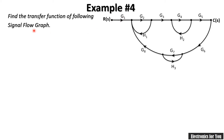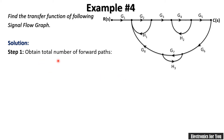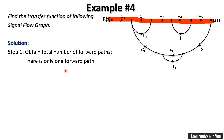Here is our next example where we have to find the transfer function of this signal flow graph. Step number 1 is to find the forward path — a path from input to output without repeating any point. Moving from R(s) to C(s), this is our forward path P1. This is the only forward path because all other arrows are in the backward direction, so every other point would repeat. The gain of P1 is G1 × G2 × G3 × G4 × G5.